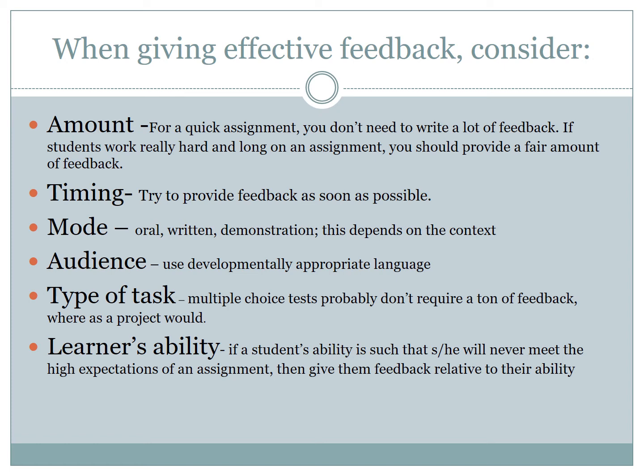Consider the learner's ability. If a student's ability is such that they will never meet the high expectations of an assignment, give them feedback relative to their ability. If student A is at level one and student B is at level ten, you want to try to bring student A up to two or three, but you expect more out of the student already at ten — you want to get them to eleven or twelve. So the feedback you give each student is going to be different.